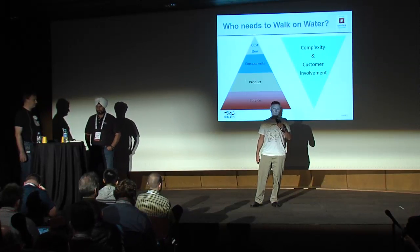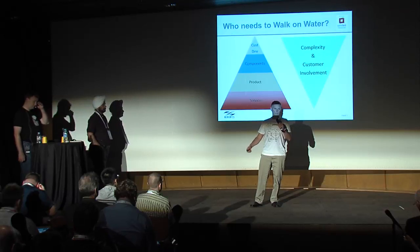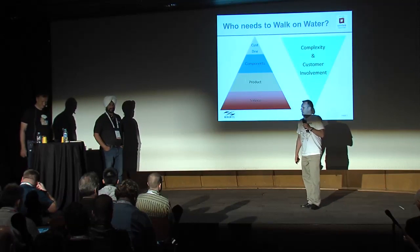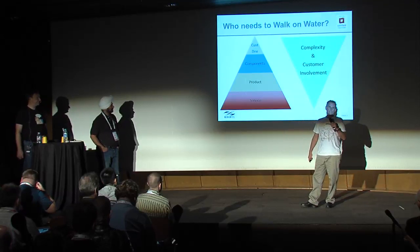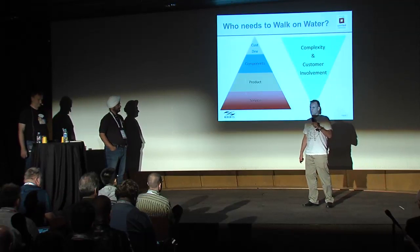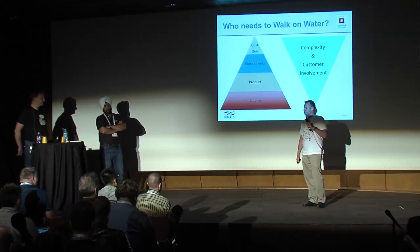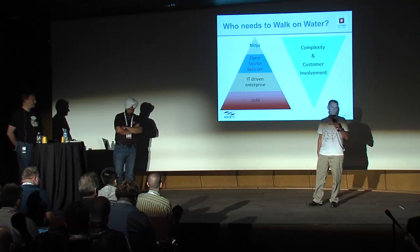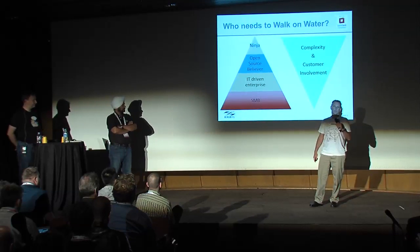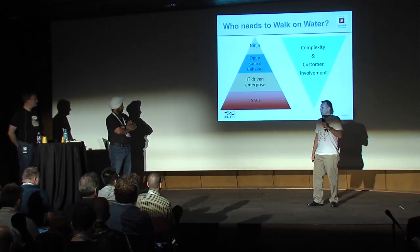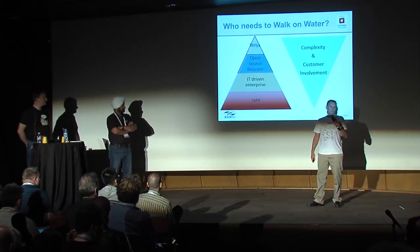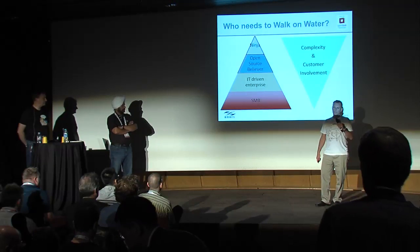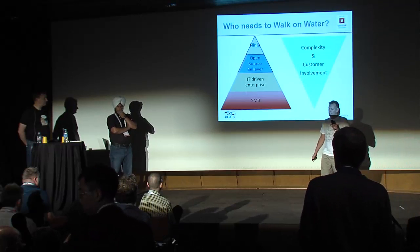As you move up into the pyramid, the complexity and customer involvement increases significantly. You have the true ninjas at the top and small-to-medium businesses at the bottom. Today we'll be talking about the upper part of this pyramid, because this is where a lot of the interesting stuff happens and some of the complexities and challenges.